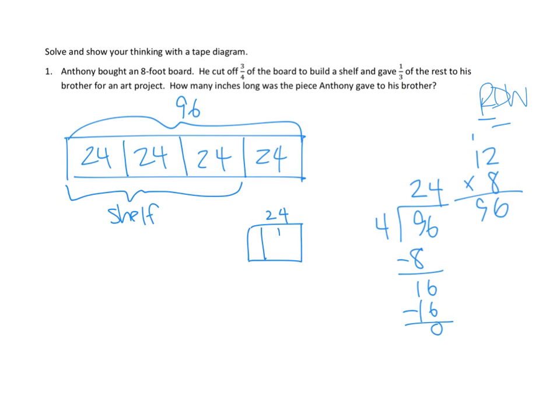So, I just need to go shoop, shoop, right? I need to divide that twenty-four into three parts. He gave one-third of the rest. So, this part is the part that went to his brother. I'm going to put a B there, right?